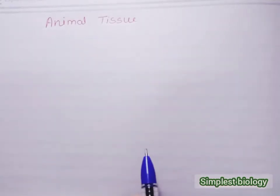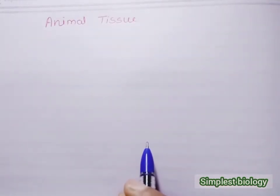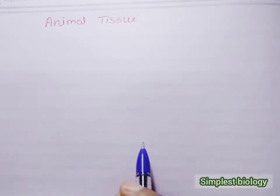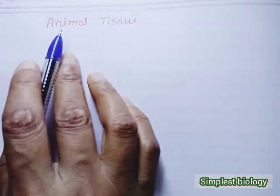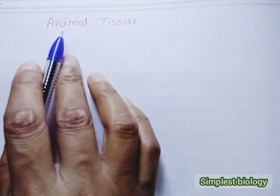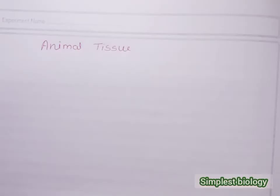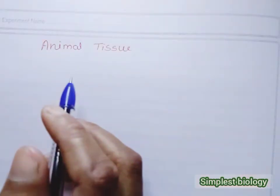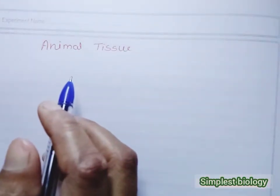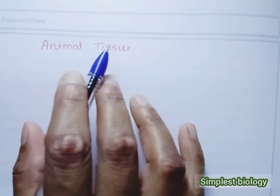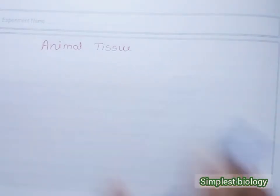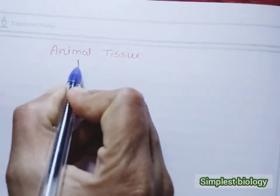Hello students. In the last video we discussed about plant tissue and their types — simple plant tissue in the first video and complex plant tissue in the second video. In this section we talk about animal tissue. As we know, the animal body is made up of cells, and a group of cells we call tissue.